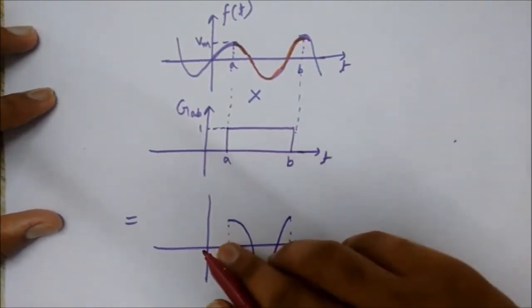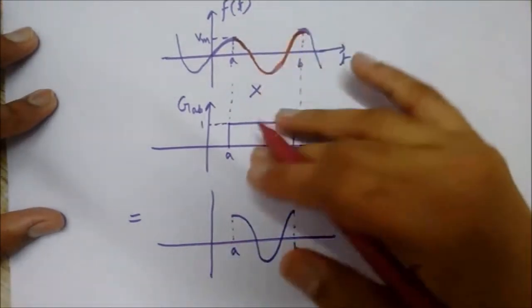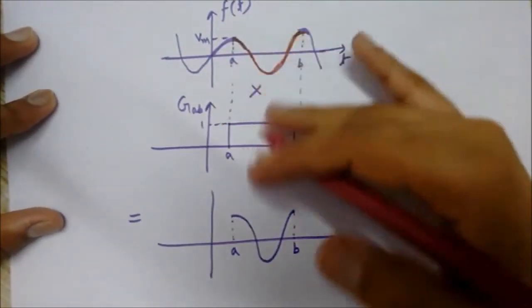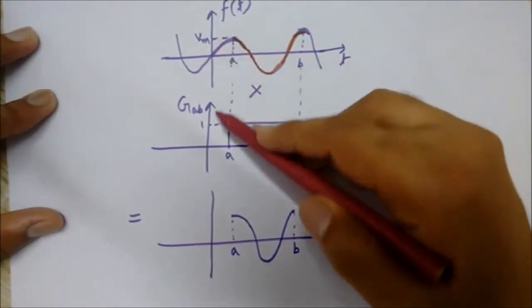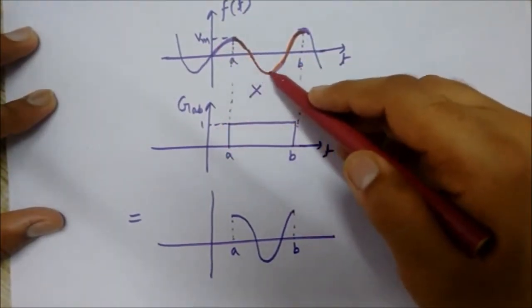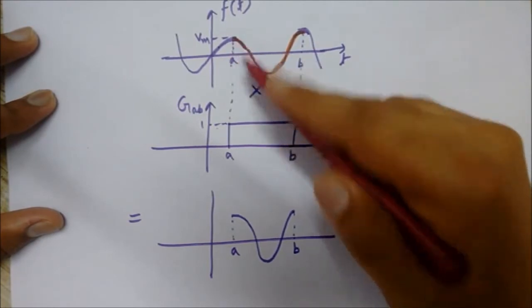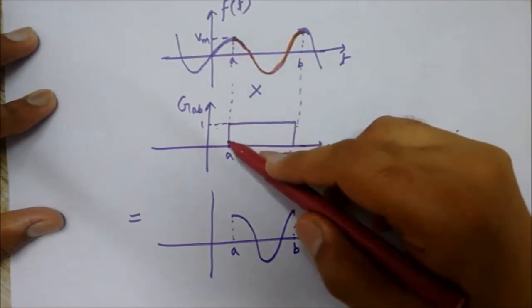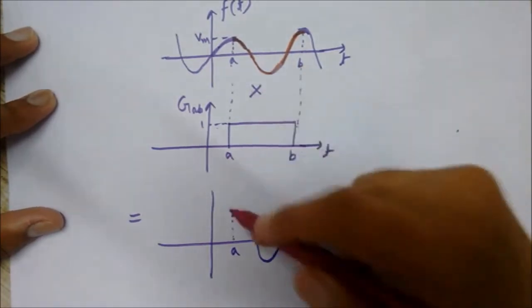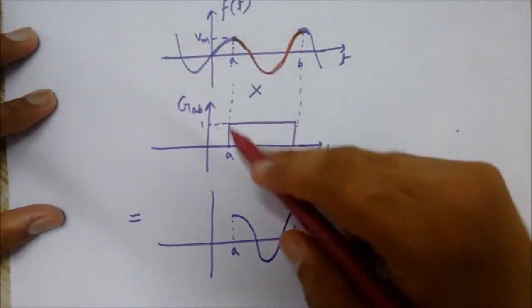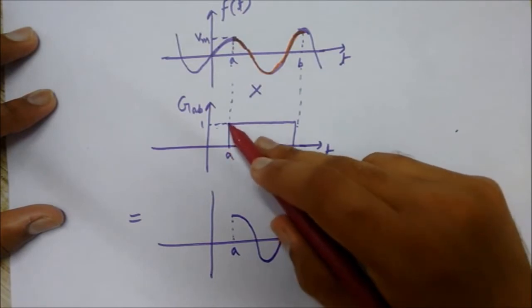So if I multiply the corresponding values - multiplying two signals means multiplying the corresponding values, like multiplying this value with this value, the value at a of this signal with the value of a of this signal. In this way it is multiplied. So you can see that all the values which are less than a...